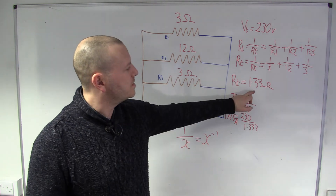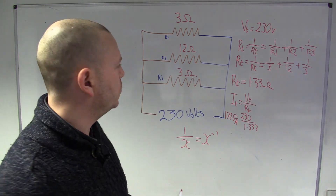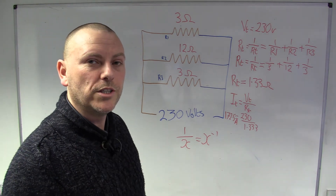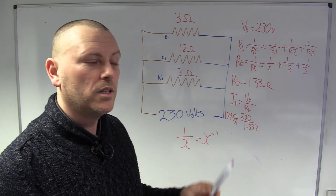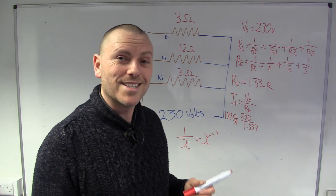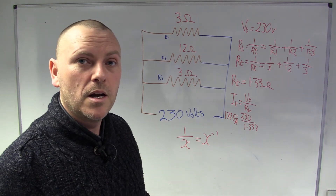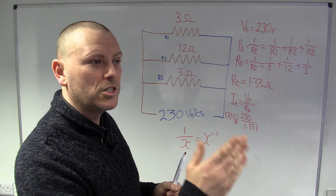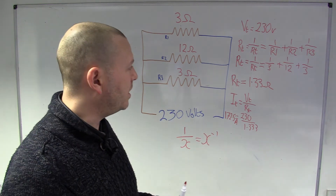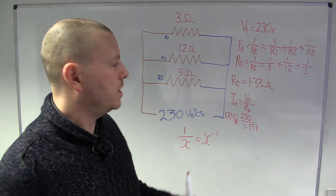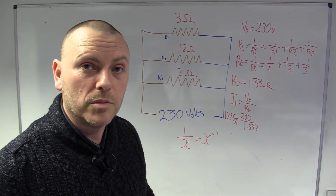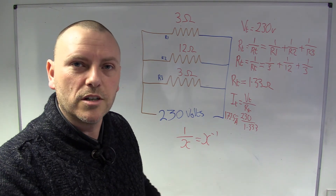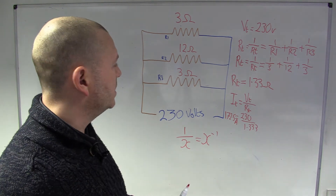Your total resistance on a parallel circuit will always be lower than the lowest individual value. That's particularly important when you're doing insulation resistance on a fuse board. The regulation says it has to be a minimum of 1 megaohm, but that's over all of the circuits, not individually. So you might individually measure them and they all comply, but when you do a global check and put them into that equation, they might not comply.